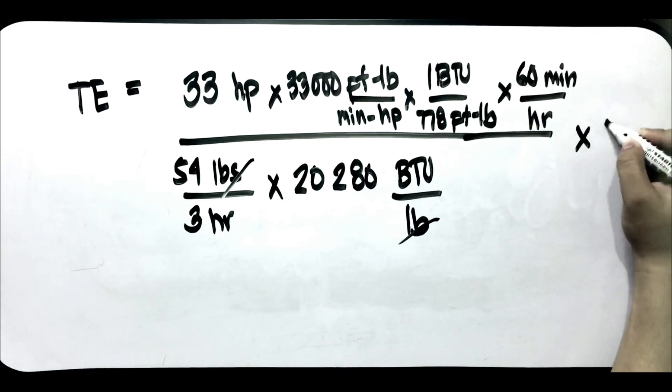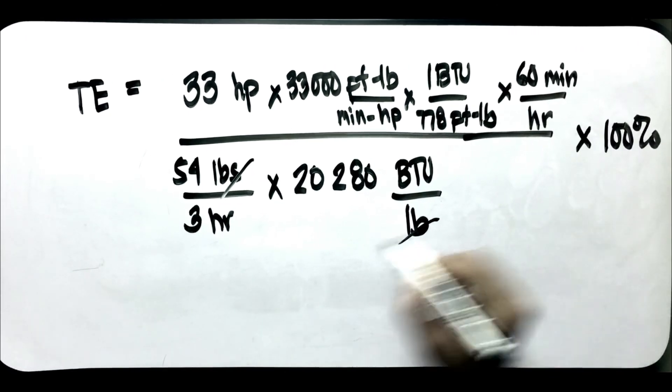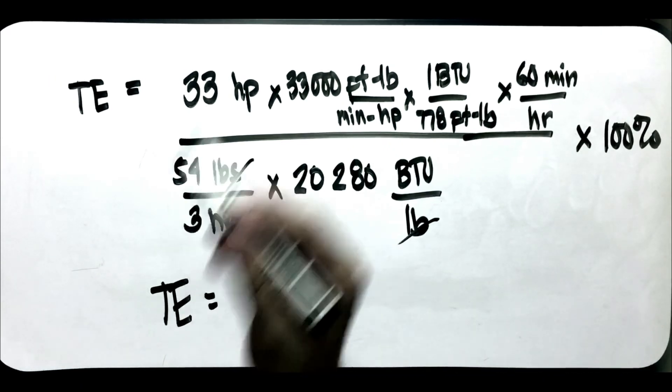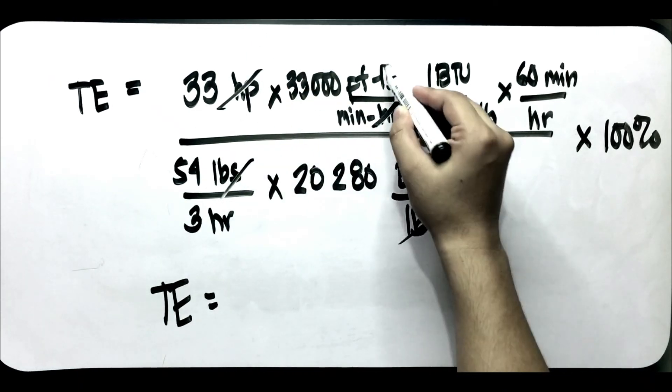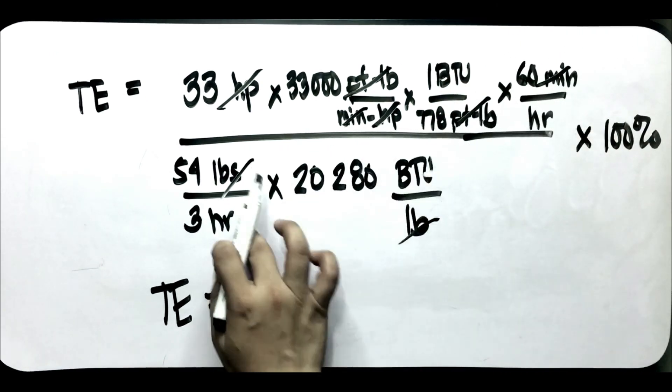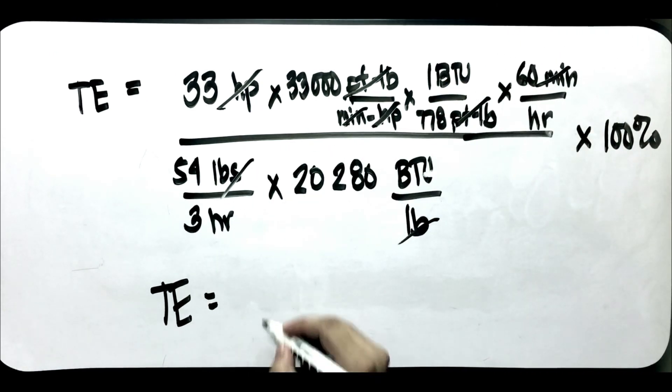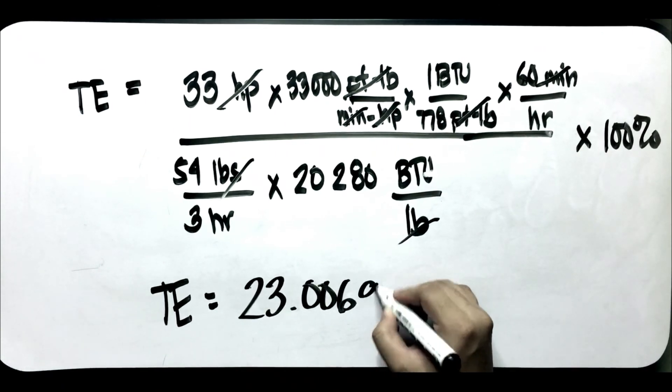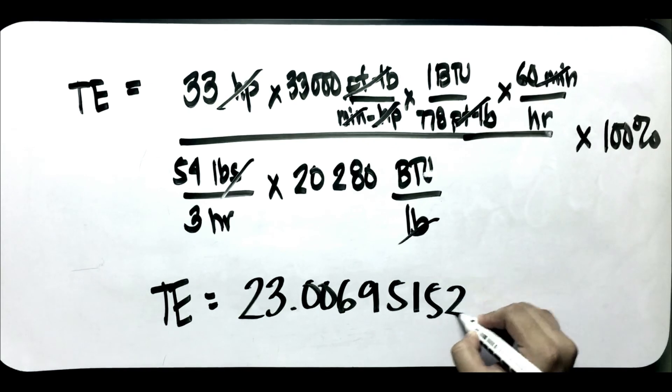Multiply ito by 100%. Makuha natin yung thermal efficiency dito. Tingnan muna natin, cancel ito. Cancel yung foot pound, cancel yung minute BTU per hour. Makuha natin yung thermal efficiency dito is 23.00695152%.